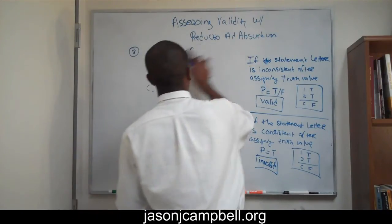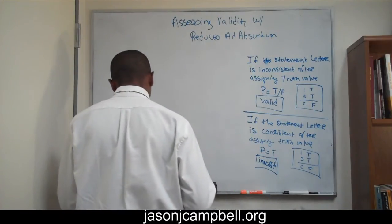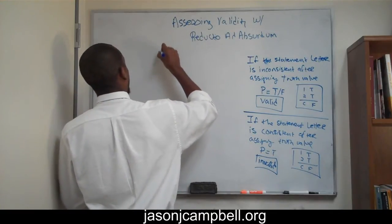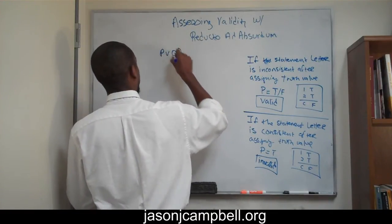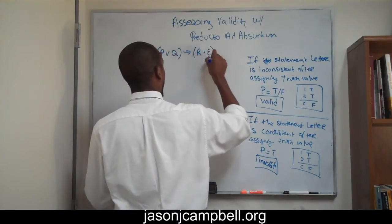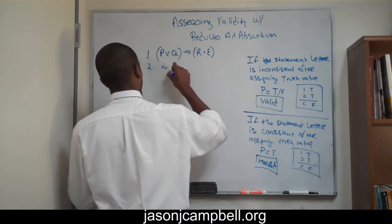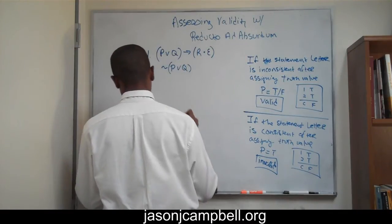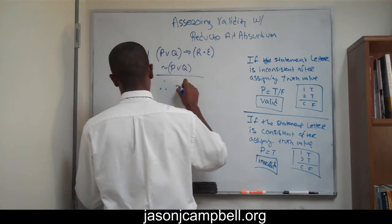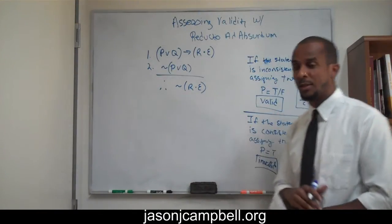So that's number three done. Number four: I have P or Q. If P or Q, then R and E — that's premise one. Premise two is not (P or Q), and my conclusion is not (R and E). Okay, this one's a bit more complicated.